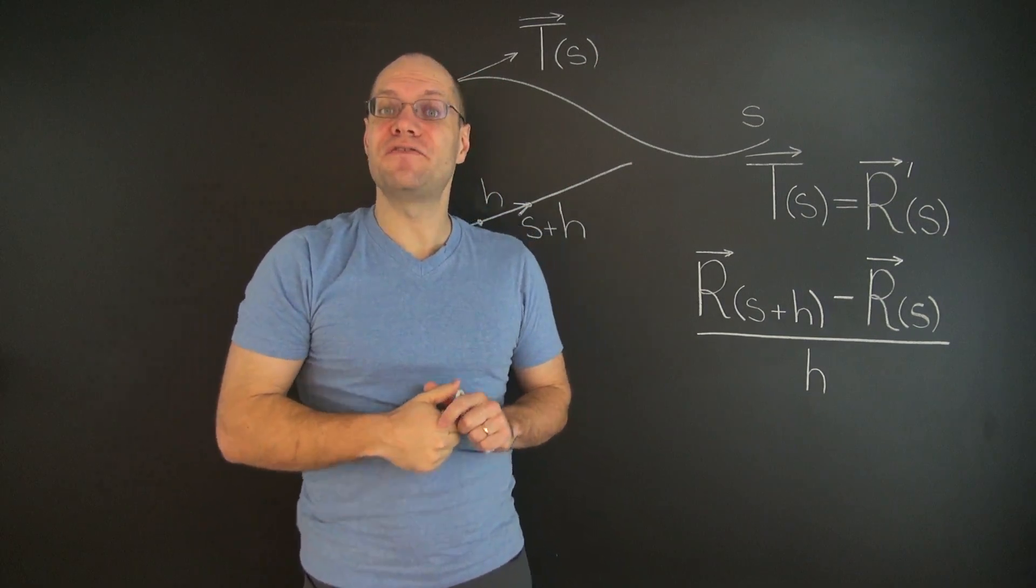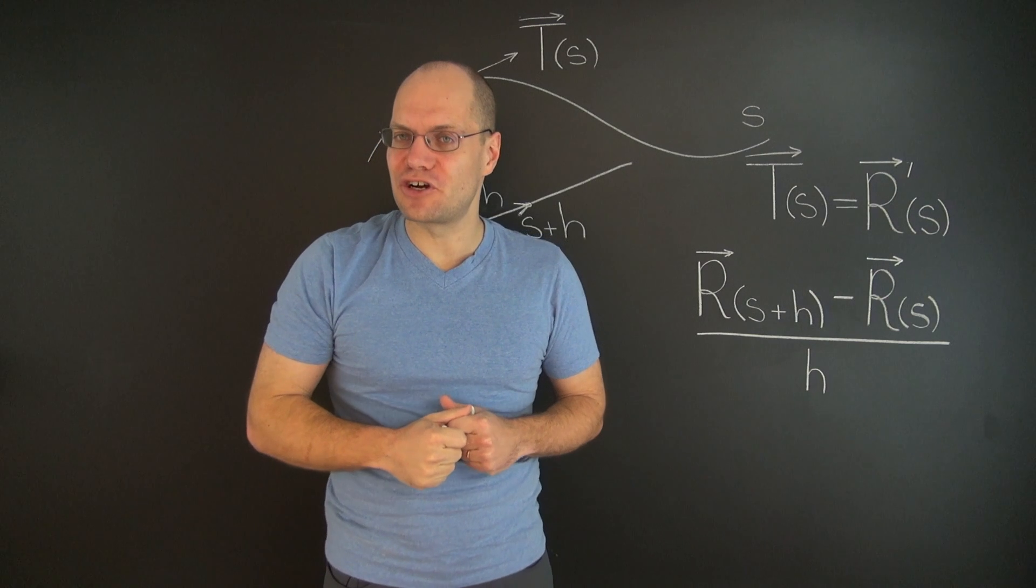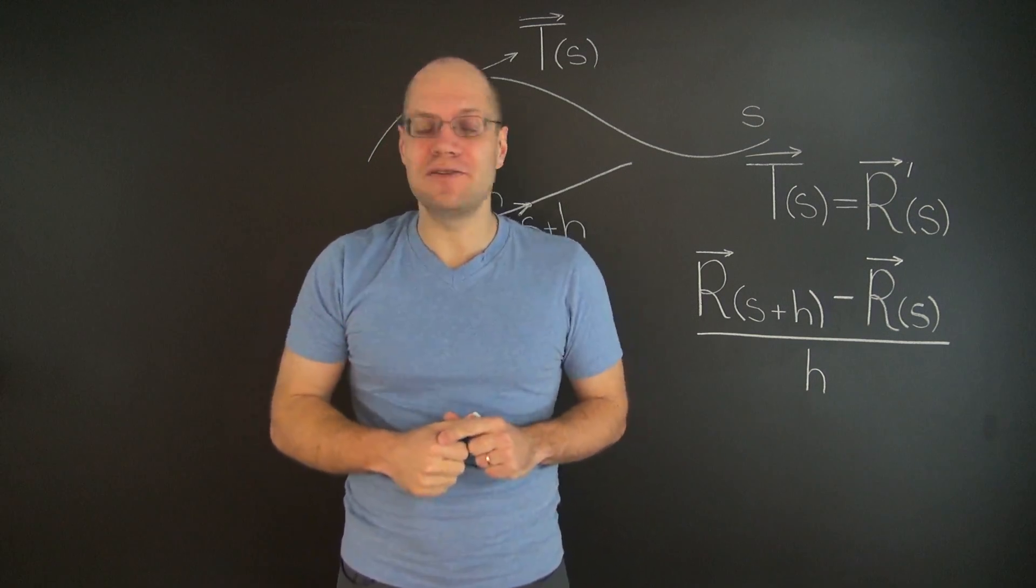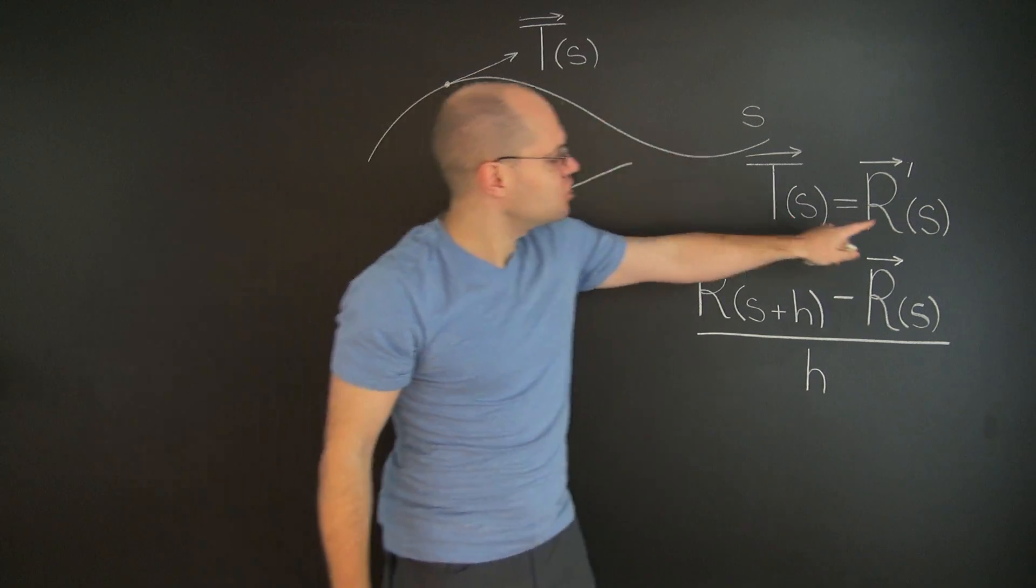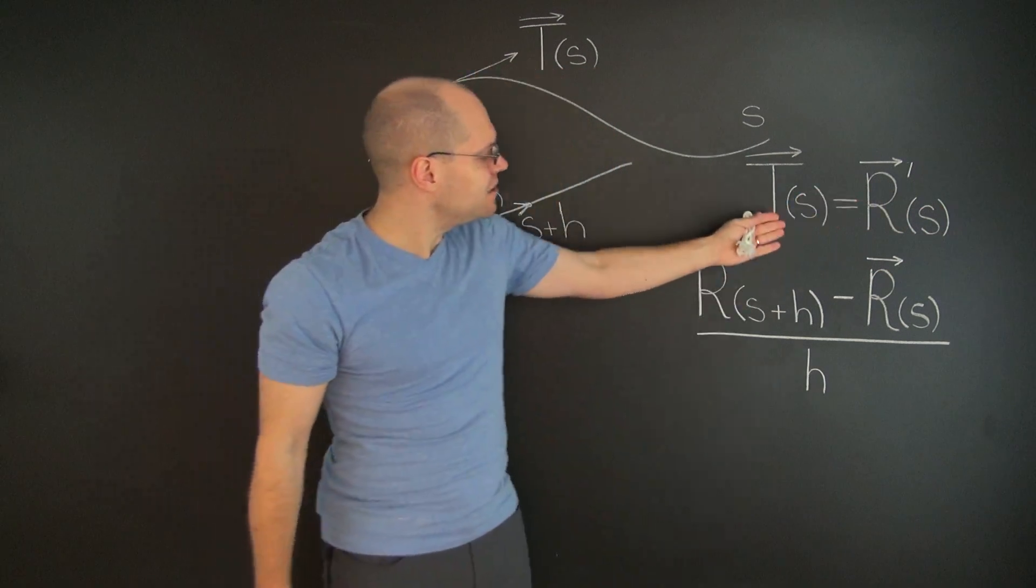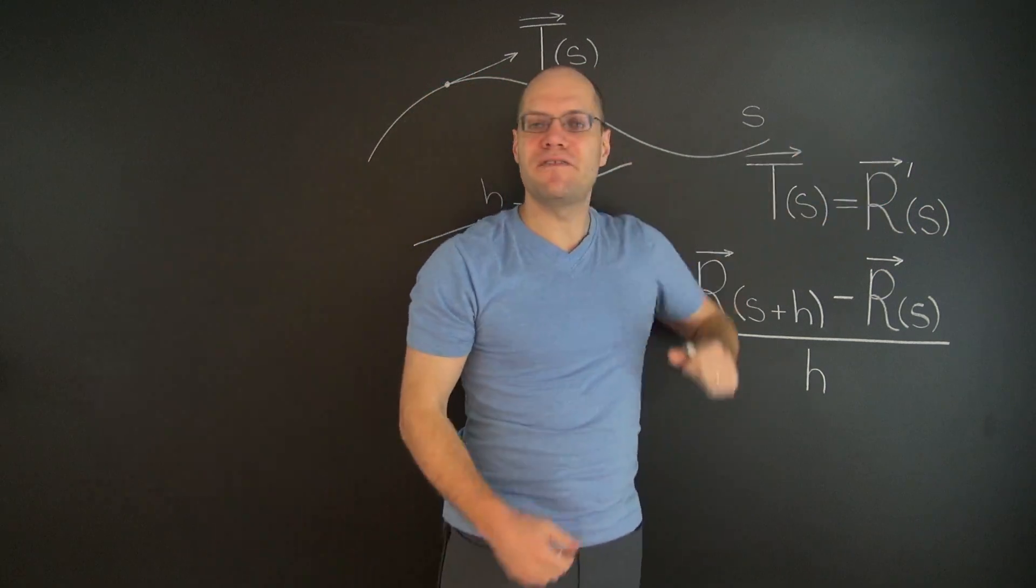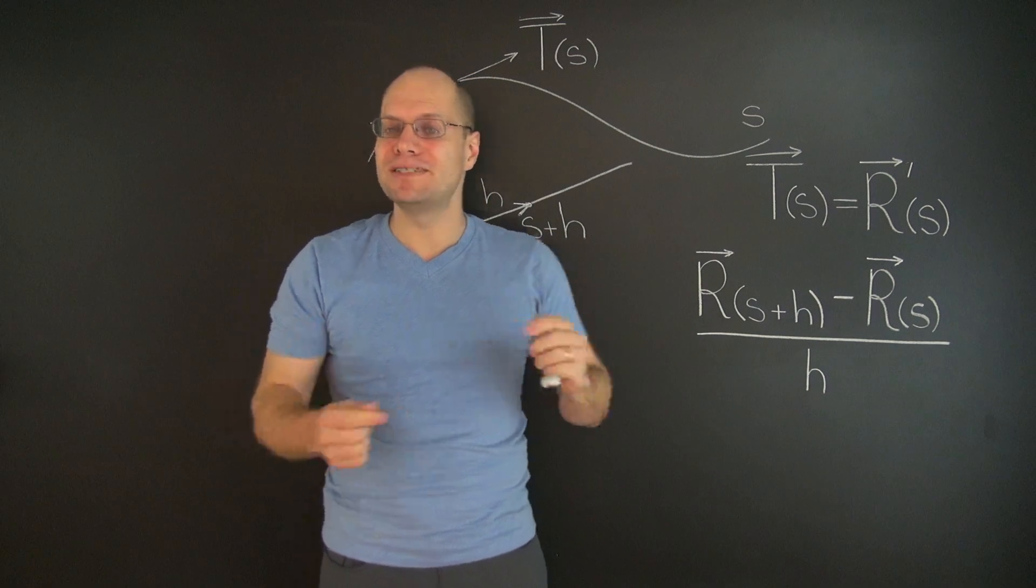The unit tangent is a fundamental object associated with the curve. And we have just found out that parametrizing the curve by arc length gives us a way of obtaining the unit tangent by straightforward differentiation of the position vector.